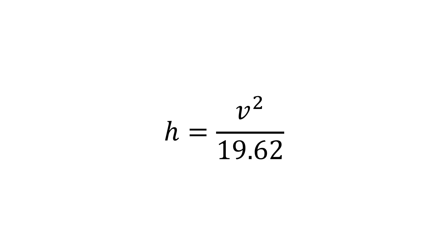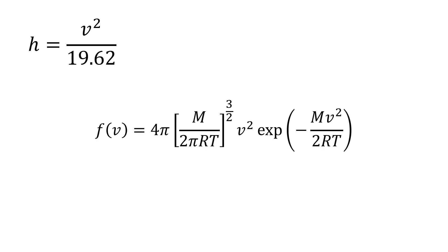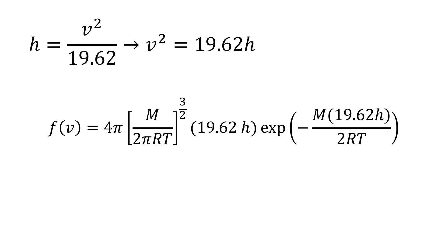Through some more clever mathematics and experimentation, we also know that in a given volume of gas, the velocity of the particles follows the Maxwell-Boltzmann distribution. This gives the fraction of particles in a given volume with a particular speed. We can figure out how many of the molecules at sea level will have sufficient speed to reach some arbitrary height, because we have the expression that h equals velocity squared divided by 19.62, which we can rearrange for v squared and plug into the Maxwell-Boltzmann distribution.